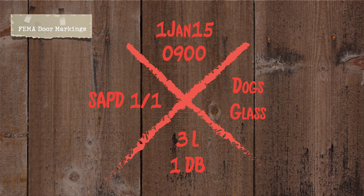After all hazards are marked, the marking is complete. Anybody walking by, driving by, or conducting a survey of the area can look at this building and know pretty much exactly what happened. They'll know that on January 1st, 2015, San Antonio Police Department Precinct 1 Search Team 1 entered at nine in the morning, evacuated three living people, found one dead body, and encountered dogs and hazardous glass. With this marking, there's a whole lot of helpful information you can quickly glance at to understand the situation inside.